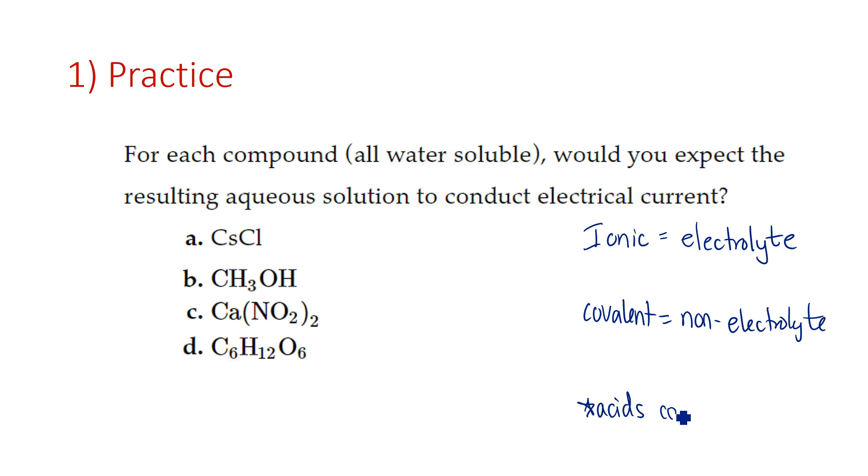Acids are covalent compounds that are electrolytes and we are just going to avoid acids for now. None of these examples are acids. We're going to talk more about acids in the second semester. So you just want to look for: is it ionic or covalent? So this first one here, it's a metal and non-metal, it's ionic.